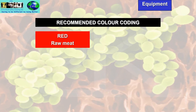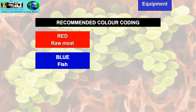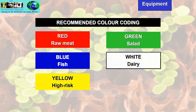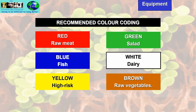Recommended colour coding: red for raw meat, blue for raw fish, yellow for high-risk or cooked food, green for salads and fruit, white for dairy products such as cheese, butter and sandwiches, and brown for raw vegetables — mainly those grown in soil. Colour-coded preparation boards and knives should be used accordingly. Salad vegetables can be prepared on the green salad preparation board.